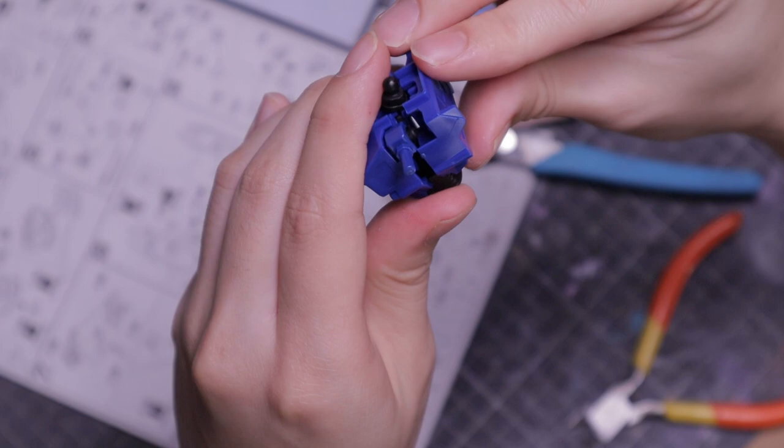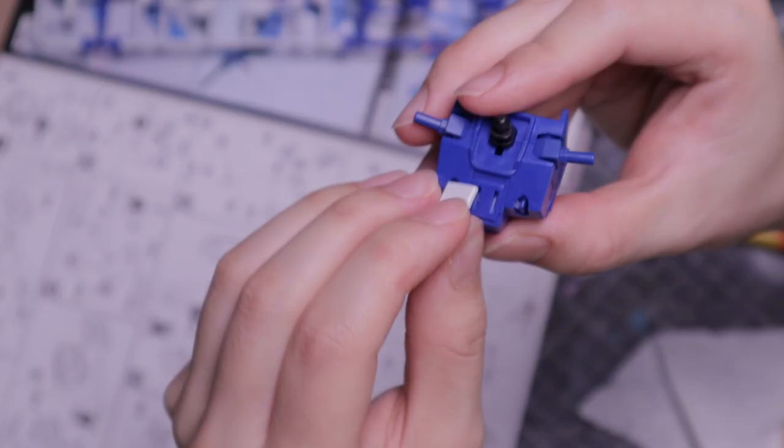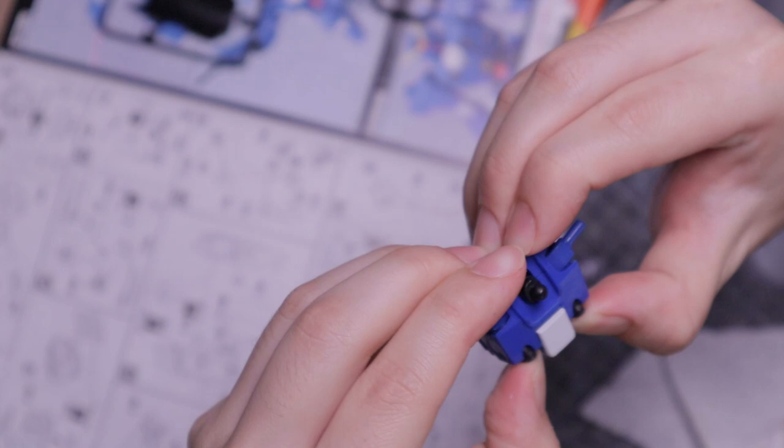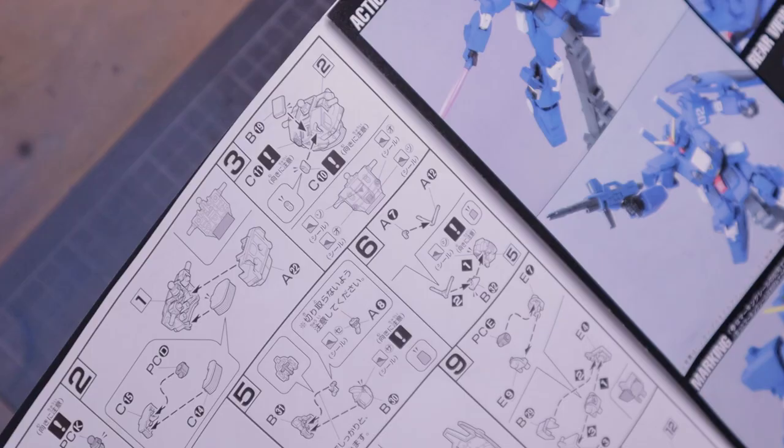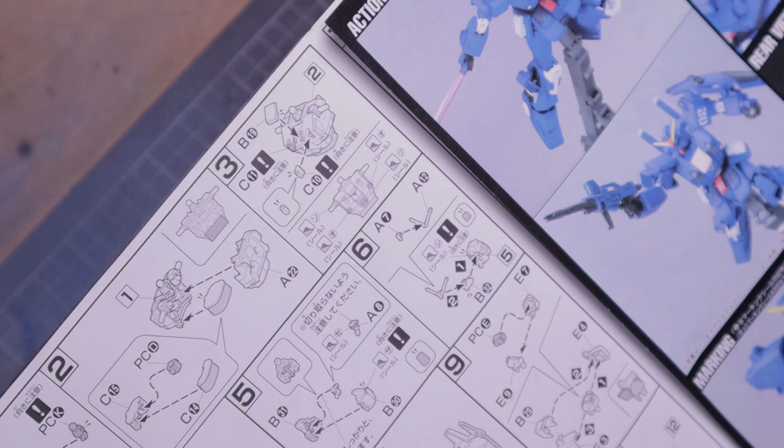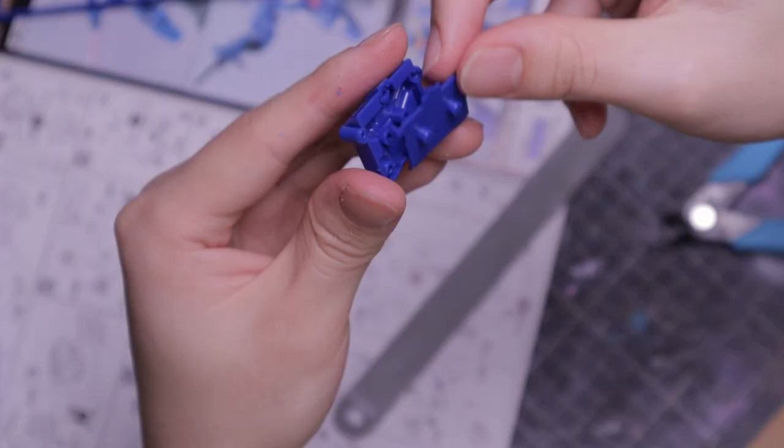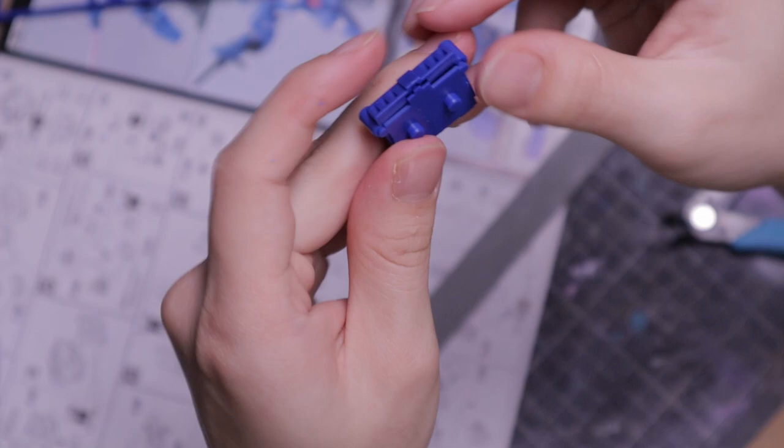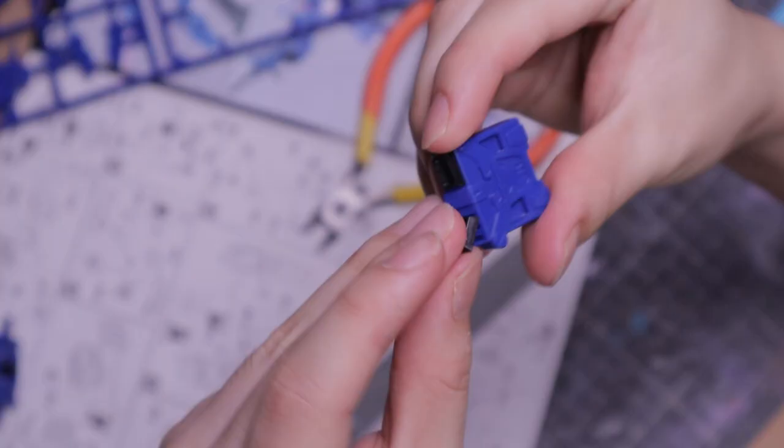Join B19 to the torso, then C11 and C10 to the chest. And to finish assembly three, the instructions suggest that I add stickers. But I'm not gonna because I'm going to paint the kit, and the stickers tend to peel off. Combine A20 and A23 together, followed by C4 and C5. Connect the subassembly to the back of the torso.